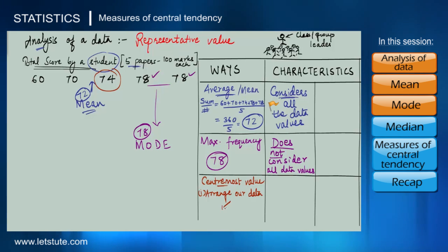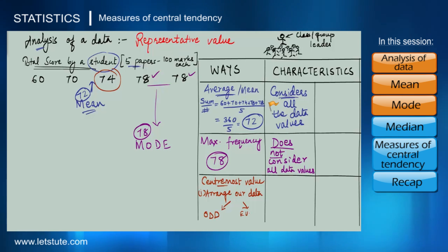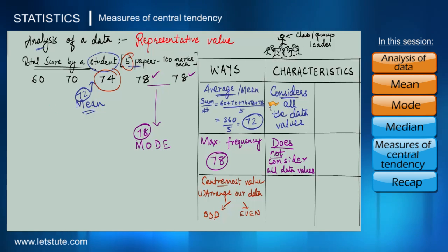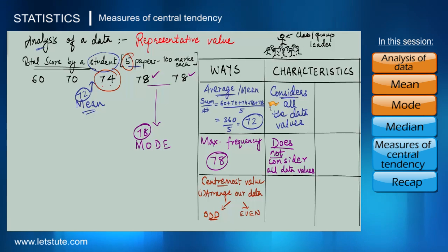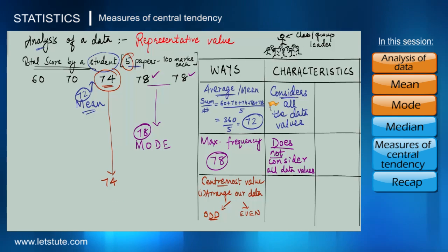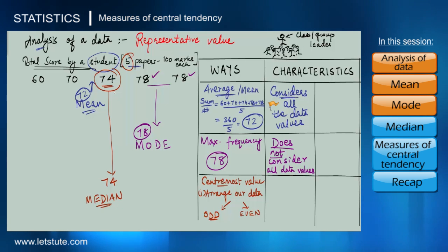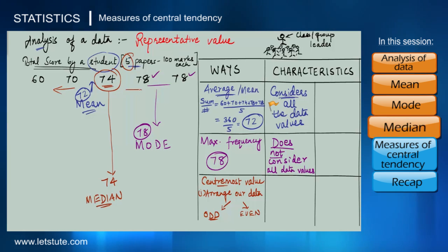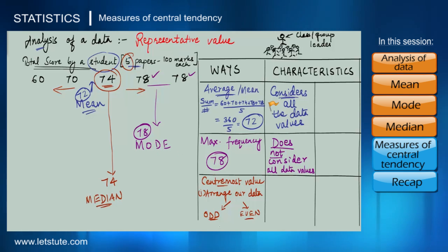The second thing to check is whether the number of data values is odd or even. Here we have five papers, so we have an odd number of data values. In that case, we count the values and find the one that falls right in the middle — 74 is the centermost value. This way of reporting the centermost value as the representative value is called the median. It divides the data exactly in half — a lower half and an upper half each with two values.